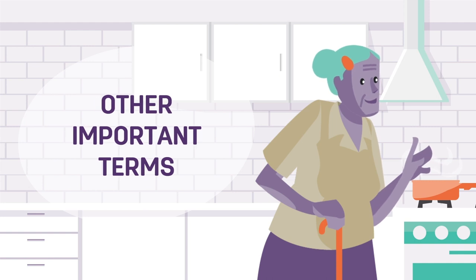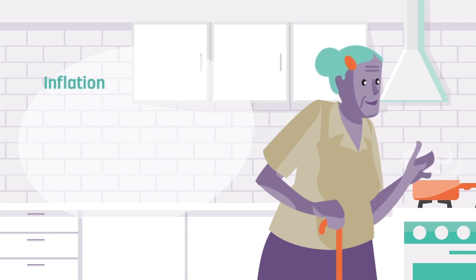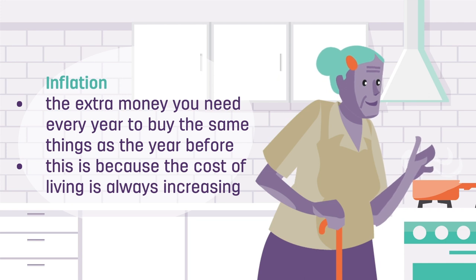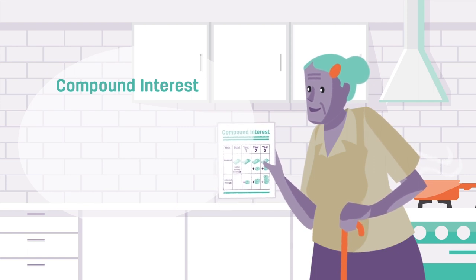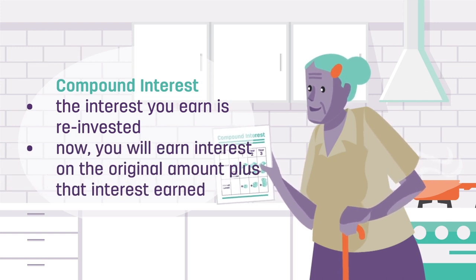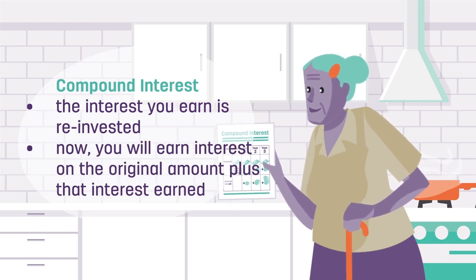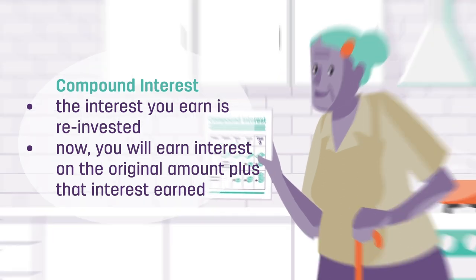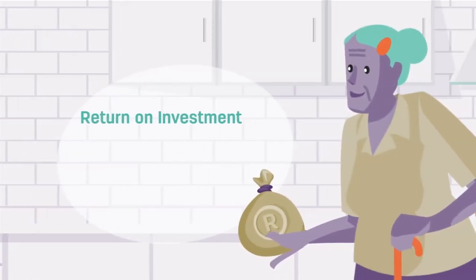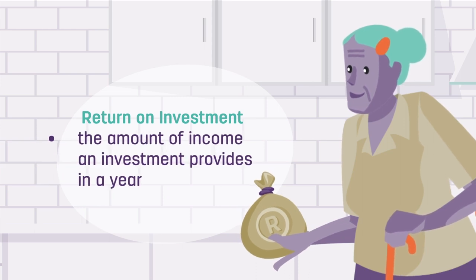There are also other important terms to understand. Inflation is the extra money that you need each year in order to buy the same things as the year before, because the cost of living is always increasing. Another term is compound interest — this is when the interest you earn is reinvested, so you continue to earn interest on the original amount plus the interest previously earned. Have a look at our handy table to see how this works. Lastly, return on investment is the amount of income that an investment provides in a year over the investment period.